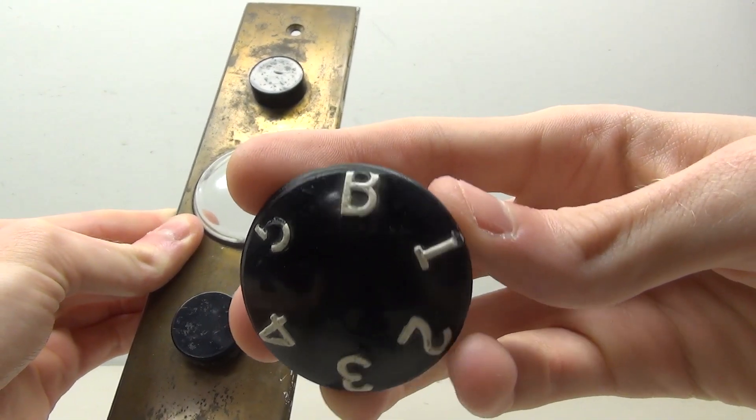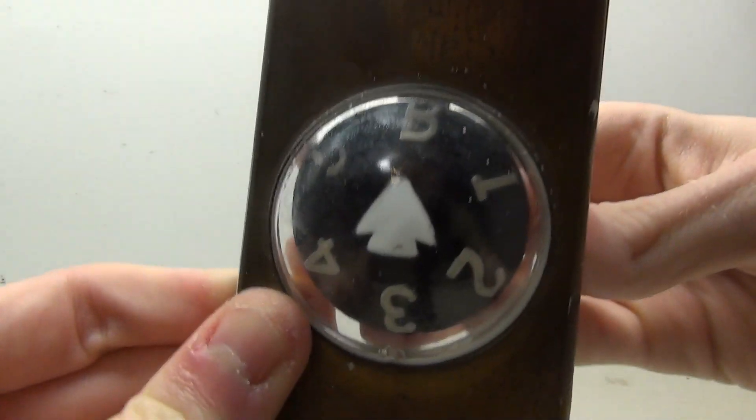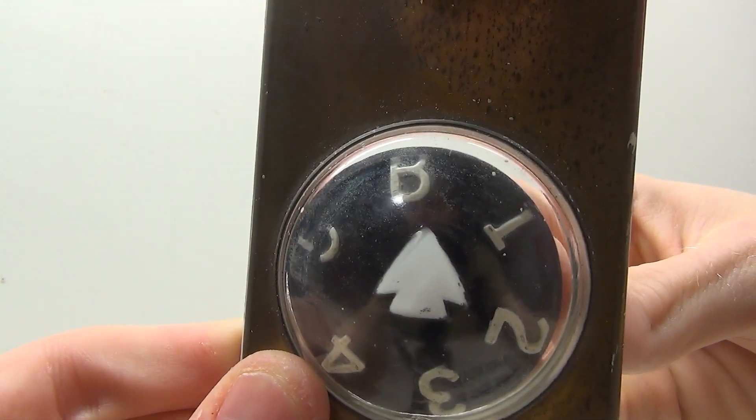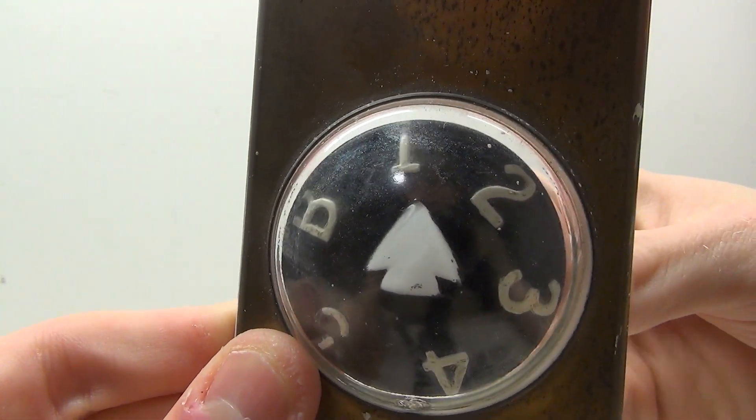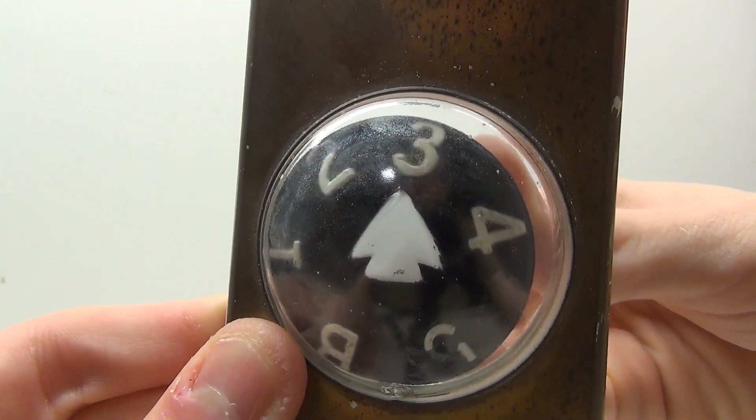So the dial has basement and then one through five. The way it would work, the arrow points to the floor and as the car moves up and down, the little dial turns and it points to a different floor.